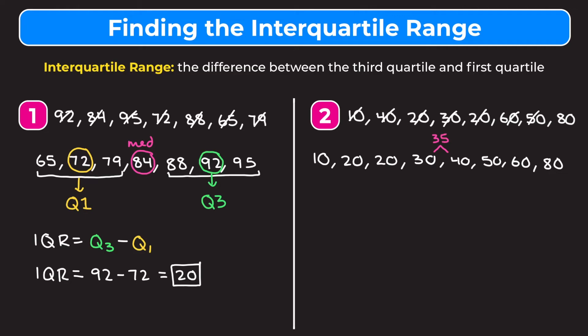To find Q1 and Q3, we need the median of the bottom half and the median of the top half of the data. This time both halves have an even number of terms. For the bottom half, the median is the middle of 20 and 20 — when both middle numbers are the same, that number is just the median — so Q1 is equal to 20.